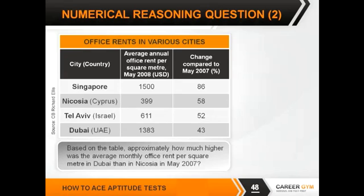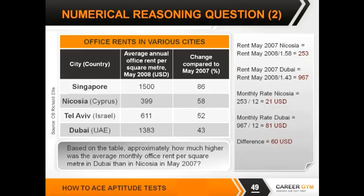Hopefully you've wrestled that question to the ground. If it was a challenge, not to worry — we'll talk through the explanation now. So: approximately how much higher was the average monthly office rent per square metre in Dubai than in Nicosia in May 2007? The table has country names on the left, the average annual office rent per square metre in May 2008, and the change compared to May 2007 as a percentage. For example, Singapore's rent in May 2008 was US$1,500, which was 86% higher than in May 2007.